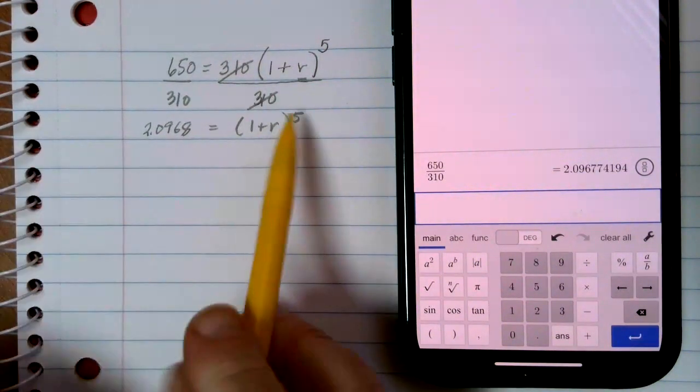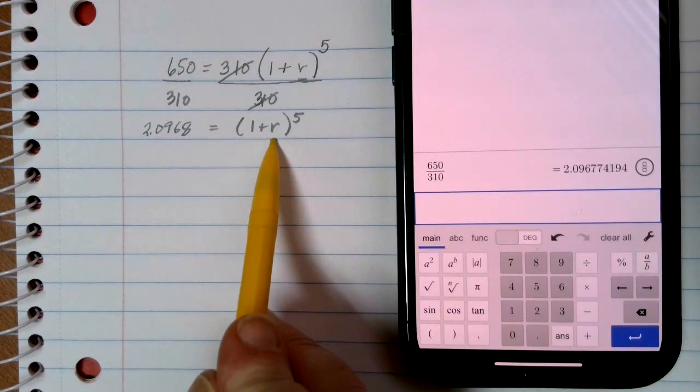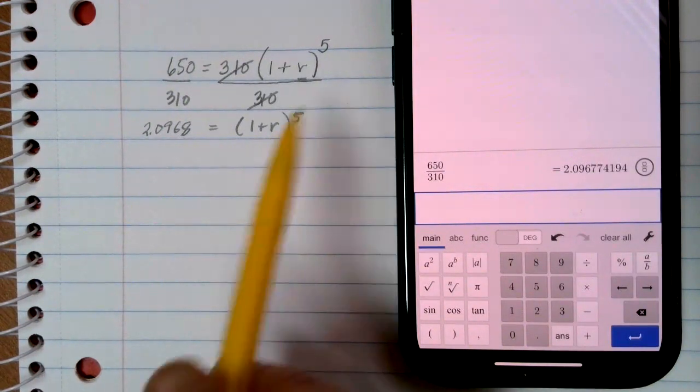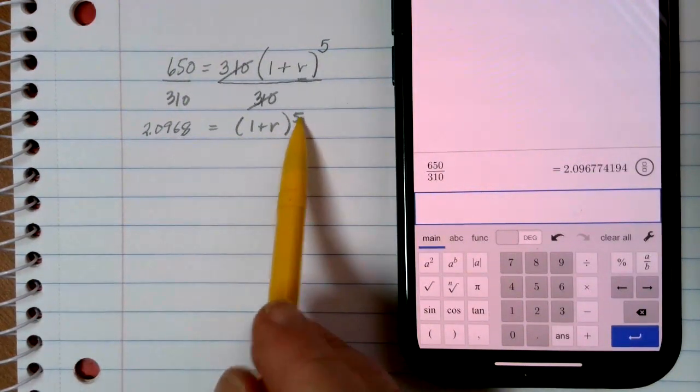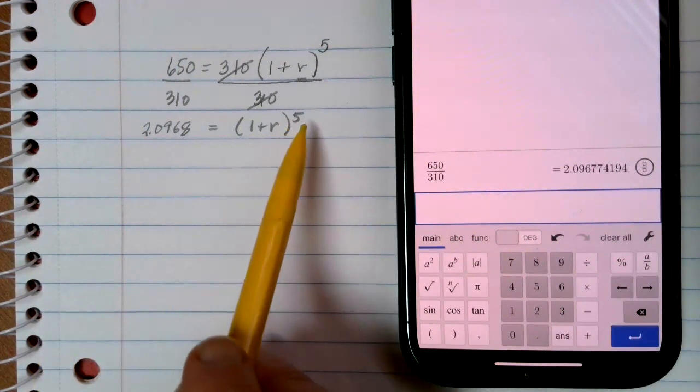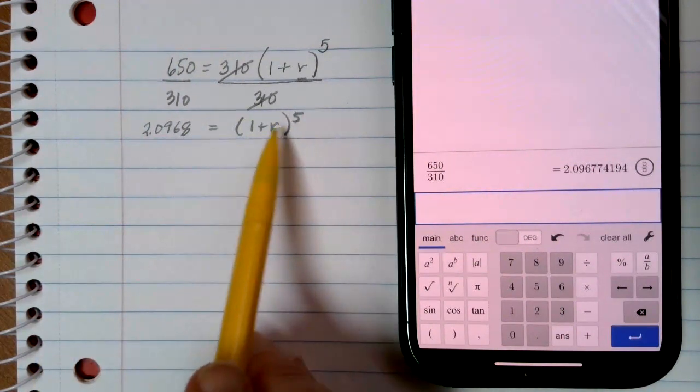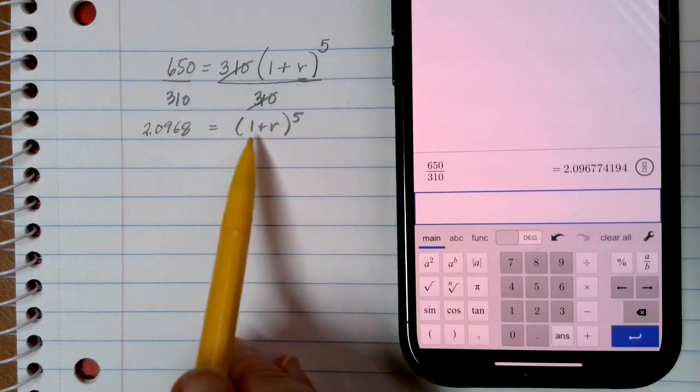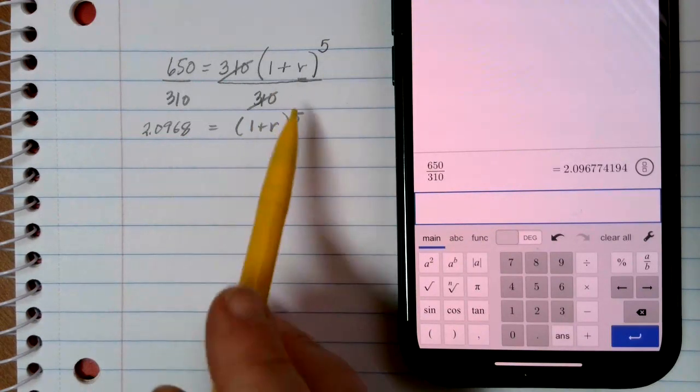So now I've got a new equation. I still need the R by itself as part of my solution process. But there's still the 5 and the 1 there in the way. The next thing that I'm going to have to get rid of is this 5 exponent, because the 1 is tied up really tight here inside the parentheses.